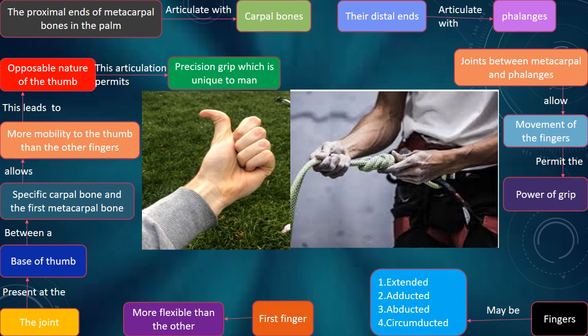The joint present at the base of the thumb, between a specific carpal bone and the first metacarpal bone, allows more mobility to the thumb than the other fingers. This leads to the opposable nature of the thumb. This articulation permits precision grip, which is unique to man.